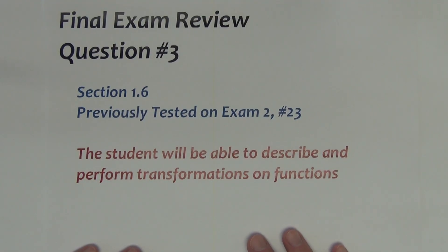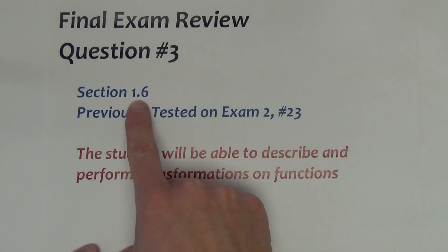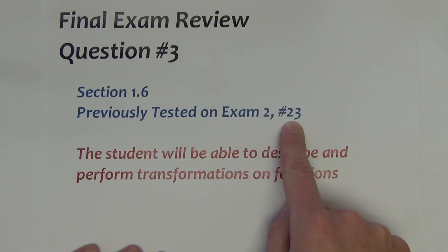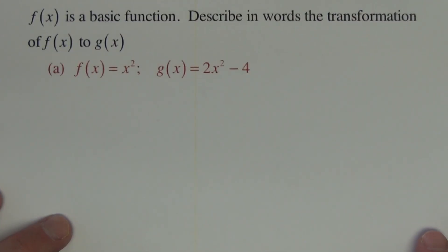Third question on the final exam was taught in section 1.6, was previously tested on exam 2, question number 23. In this question, you're going to have to have an understanding of basic transformations on functions, being able to describe transformations on functions as it relates to horizontal or vertical translations, horizontal or vertical stretching or shrinking, and reflections, all included.